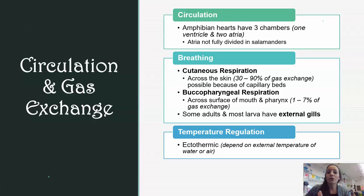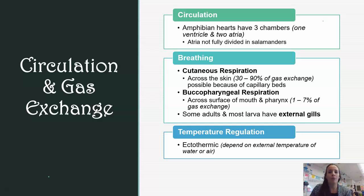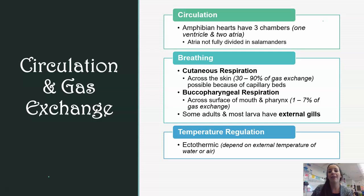When we talk about circulation, we previously talked about fish and the emphasis on heart chambers. As we move to more evolved organisms, we see more chambers. Amphibians have one ventricle and two atria, for a total of three chambers. It's also important to note that the atria is not quite fully divided in salamanders, which once again shows that connection and link as organisms have evolved.